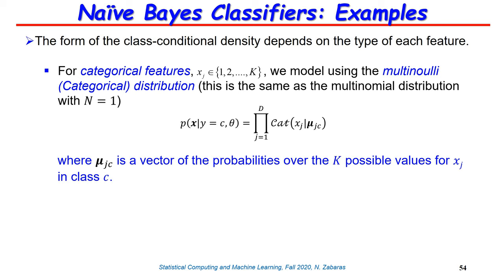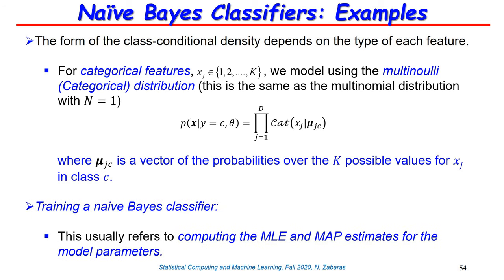For discrete features, training means computing the MLE estimate for the parameters defining the conditional distributions. We will also do the Bayesian case, computing the MAP estimate. In the process, because we're discussing add-1 smoothing from the earlier lecture, we will discuss posterior mean estimates and how, using plug-in approximations, we can write down the predictive distribution for naive Bayes classifiers. Let's proceed to compute the MLE and MAP estimates.